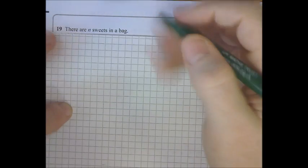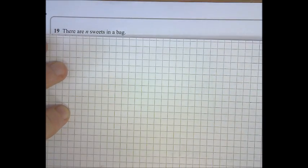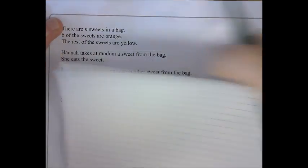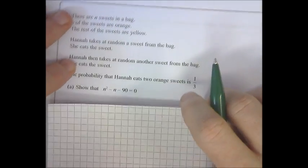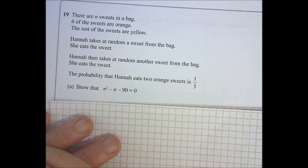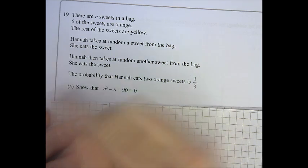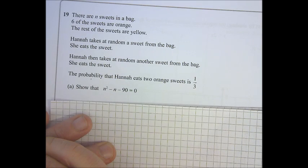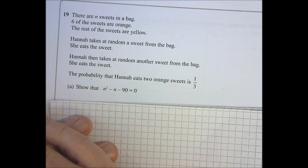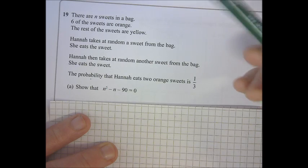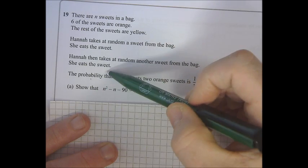Here's question 19 from the 2015 non-calculated GCSE. So we've got a probability question. Generally you can have just straight out probability questions, or you can have tree diagrams. I think this is probably going to be a tree diagram, because one thing happens, then another thing happens.